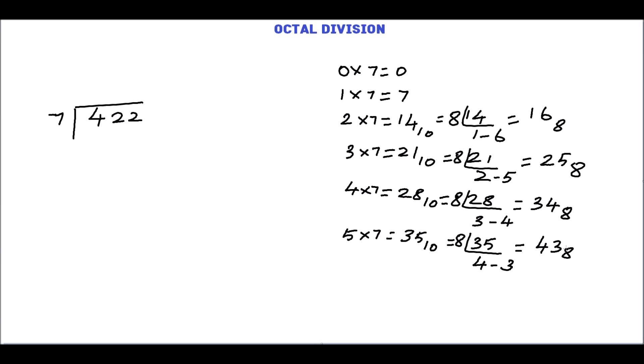6 times 7 is 42 in decimal. Convert this 42 into octal. Quotient is 5 and the remainder is 2.